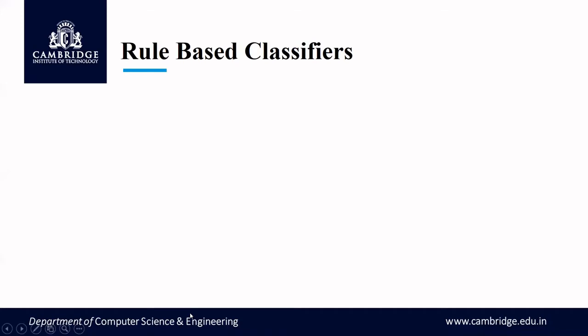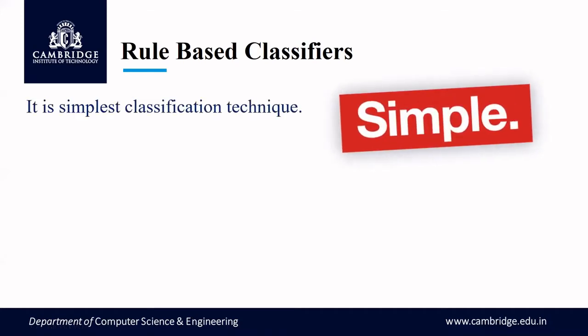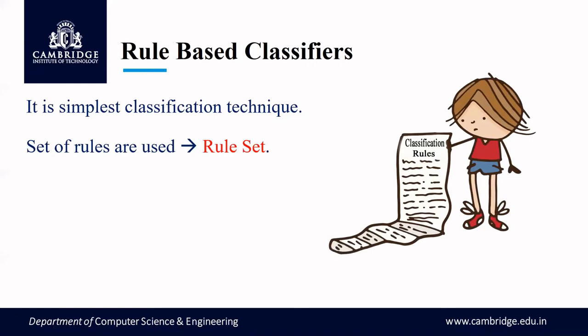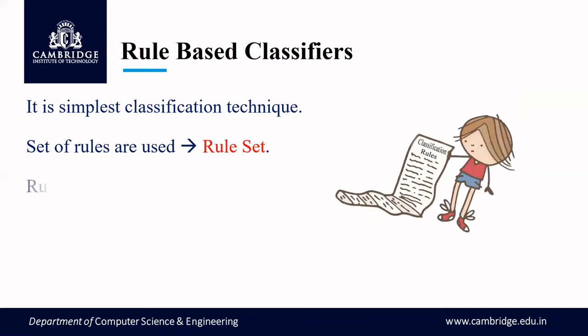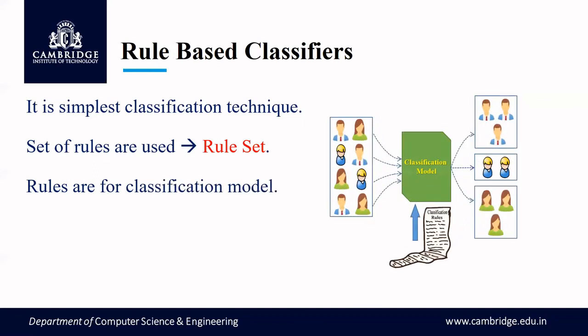A rule-based classifier is the simplest classification technique. Here, the classifier has a set of rules called a rule set. These rules are defined and put under a particular set called a rule set, which is then used in the classification model to make classifications based on those rules.